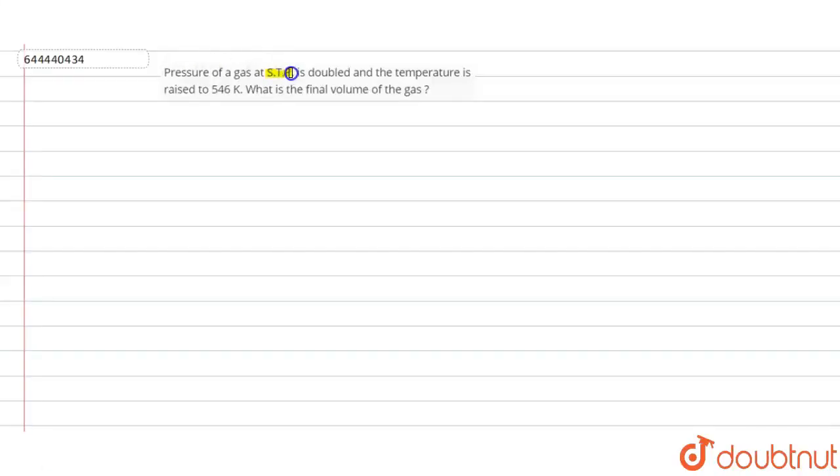STP - standard temperature and pressure - is doubled and the temperature is raised to 546K. Pressure of a gas at STP is doubled and the temperature is raised to 546K. What is the final volume of the gas? We have to calculate the final volume of the gas. You can easily calculate it by using gas equation.